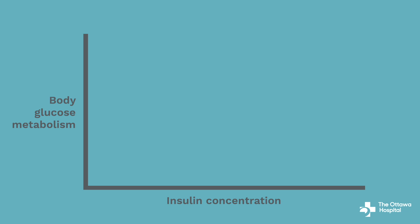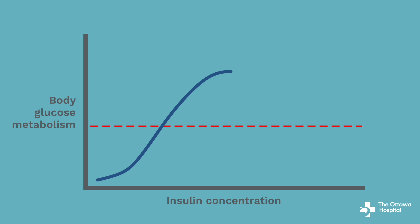Insulin sensitivity is defined based on the insulin concentration required to attain half of maximum impact on body glucose metabolism. This is indicated with the dashed red line. This blue curve refers to normal insulin sensitivity. Insulin resistance refers to a decrease in insulin sensitivity, depicted with curves that shift towards the right of the normal blue curve. For example, this orange curve is one possible curve for an individual with insulin resistance who has higher insulin concentration in order to achieve the same mid-curve impact on body glucose metabolism.